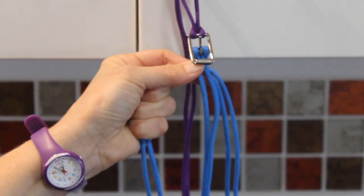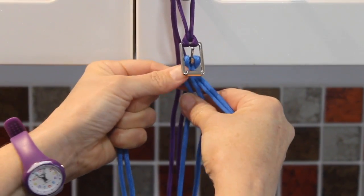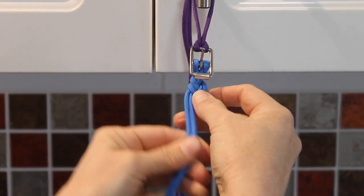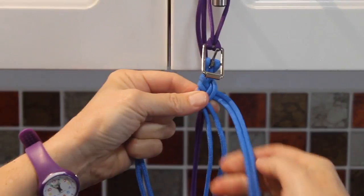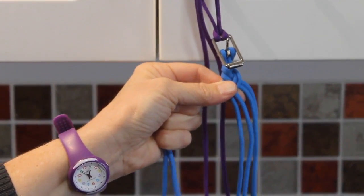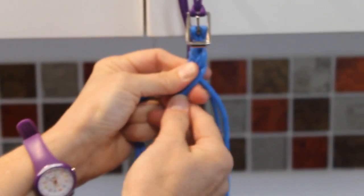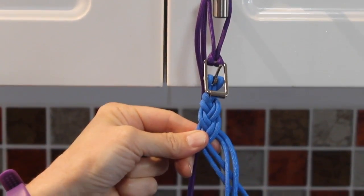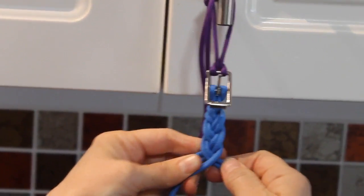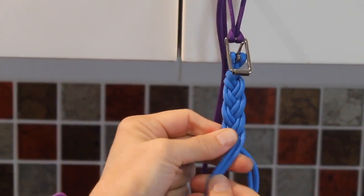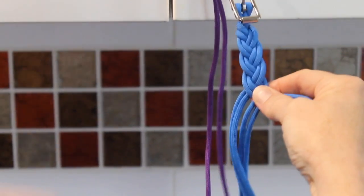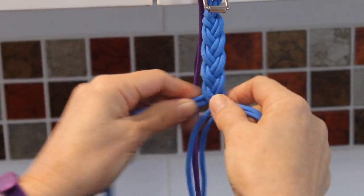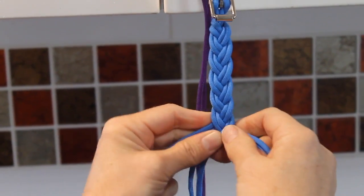So what you're going to do is you're going to start a braid, or a plait, so the right strand comes into the center, and then the left strand comes into the center. And just pull that loose thing so that it doesn't keep getting tangled. Right into the center. Left into the center. And that's the loose strand, so pull that through. Right into the center. Left. Right. Left. Right. Left.